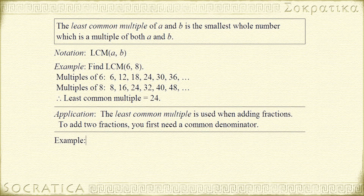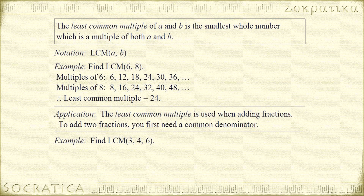Let's do another example. Let's find the least common multiple of 3, 4, and 6. This shows that we can find the least common multiple of more than two integers — it could be three integers, 5, 20, whatever. The strategy is the same as when we found the least common multiple of two numbers: list the multiples of each number and find the smallest integer that's in all of the lists.